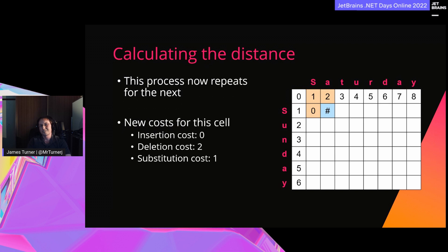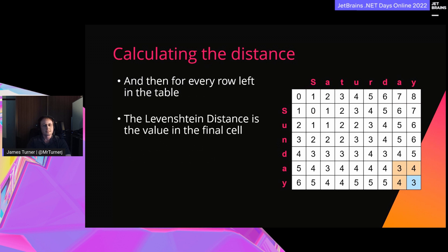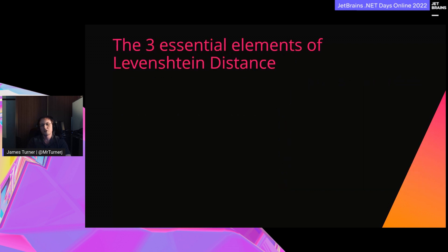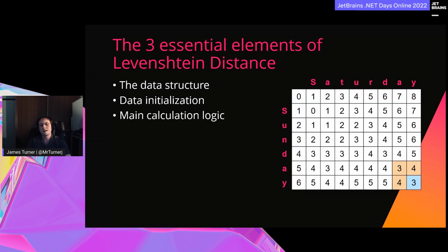The next cell has insertion cost zero, deletion cost two, and substitution cost one — the result is one. We repeat this for the rest of the row and then for every row in the matrix. The Levenshtein distance is in the bottom-right corner. For Saturday and Sunday, the distance is three. There are three essential elements to our baseline implementation: the data structure representing the matrix, the data initialization setting up the first row and column with incrementing numbers, and the main calculation logic.